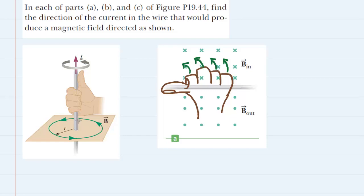Current is symbolized by I and is shown with this purple vector pointing upward. Notice that the thumb is pointing in the direction of the current. Meanwhile, as you're grasping the wire, your four fingers will naturally curl in the direction of the magnetic field. You can see that the fingers are curling in this sort of direction, and therefore we've drawn the magnetic field circling in a counterclockwise direction — based on the direction that the fingers are curling.